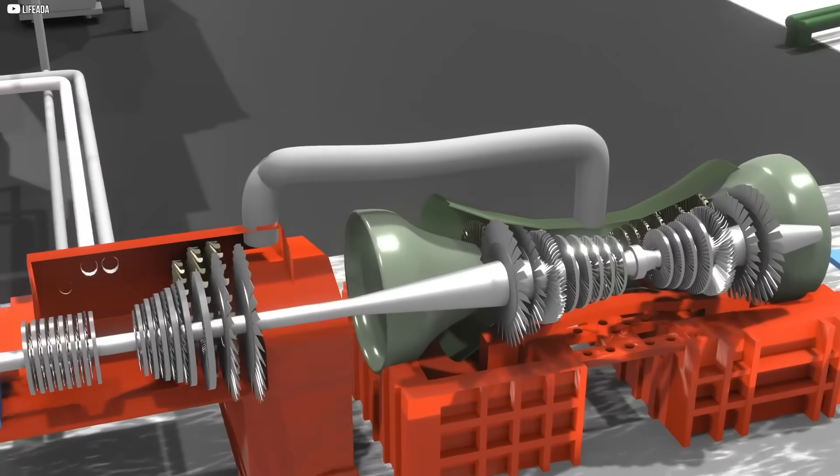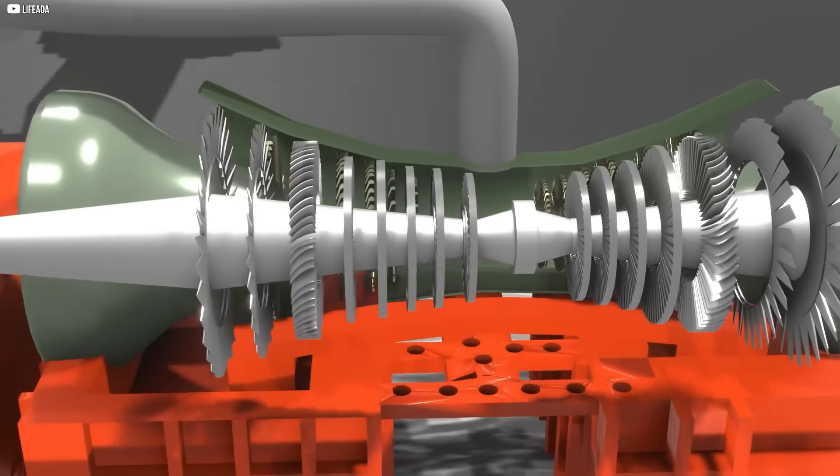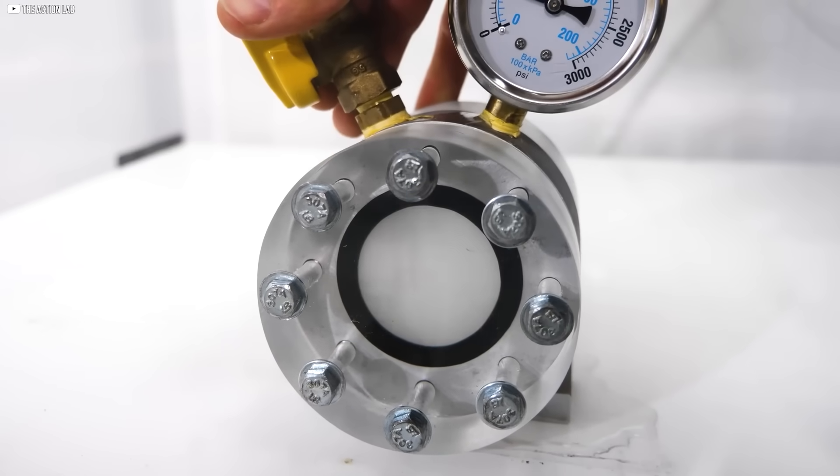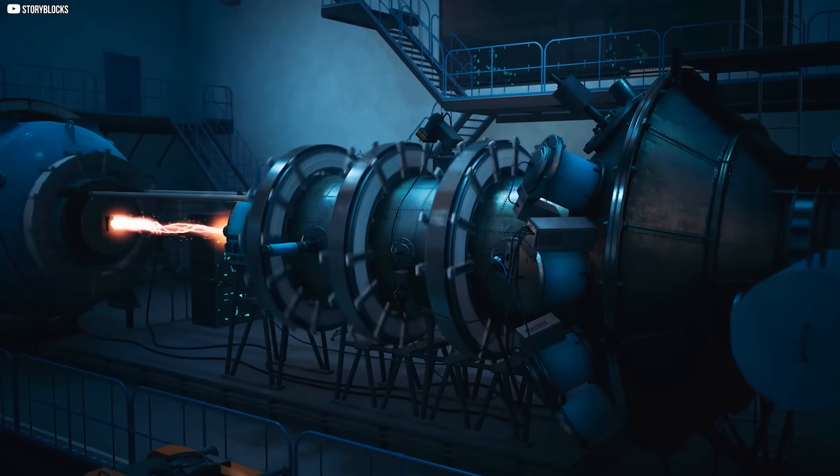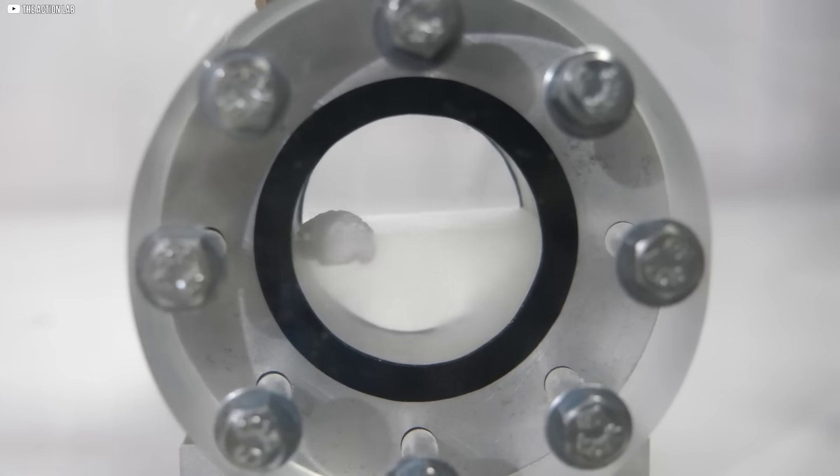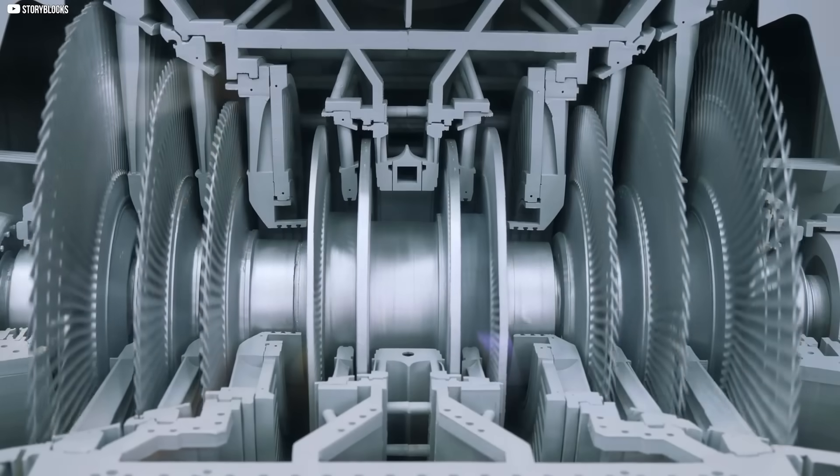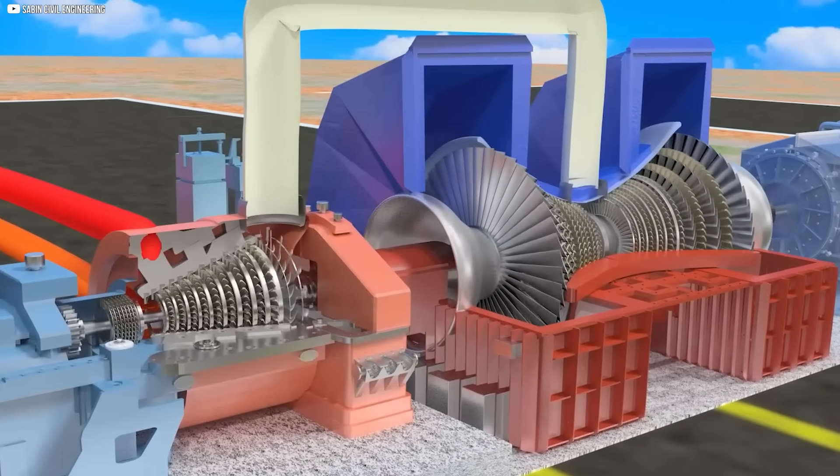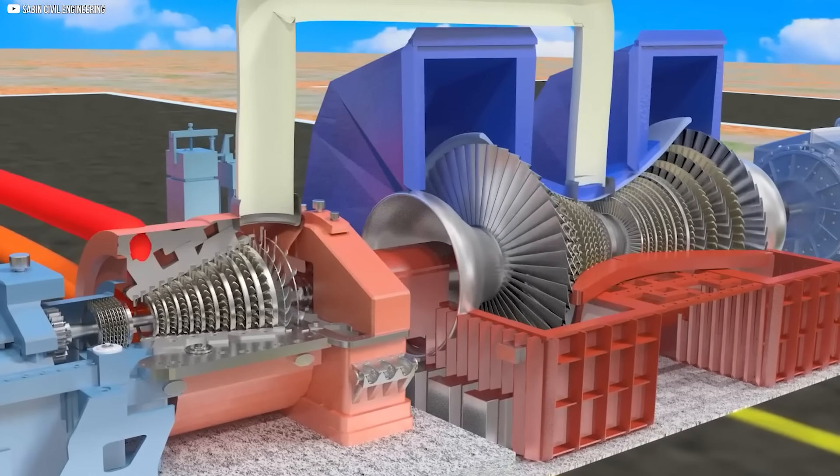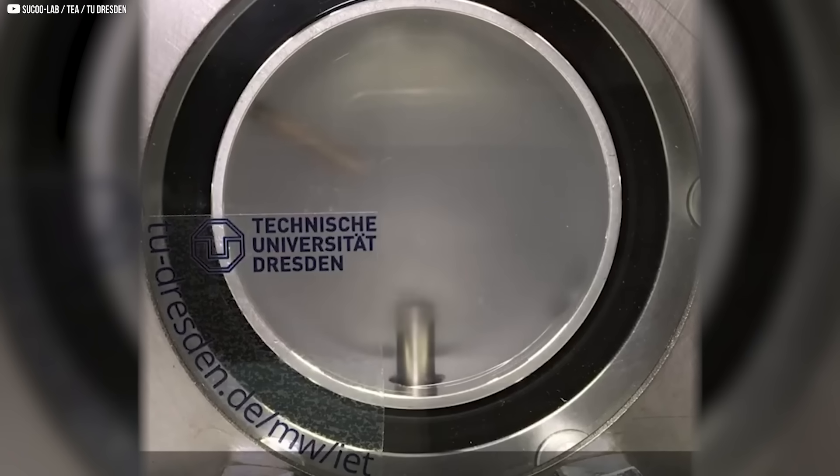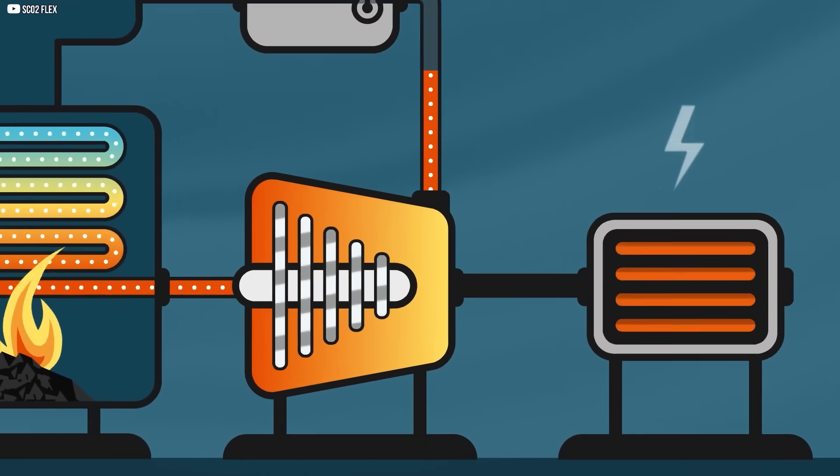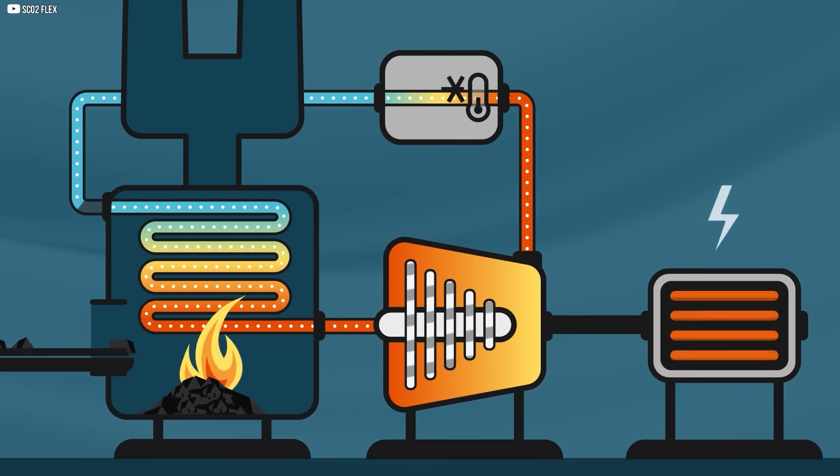Unlike steam, which must go through phase changes that waste energy, supercritical CO2 remains stable in its high-density form, enabling more efficient energy conversion. This unique characteristic makes it an attractive alternative to traditional steam in power plants, offering the potential for smaller, more efficient turbines with greater energy output. It's this blend of liquid density and gas-like flow that gives supercritical CO2 its power in the energy sector.